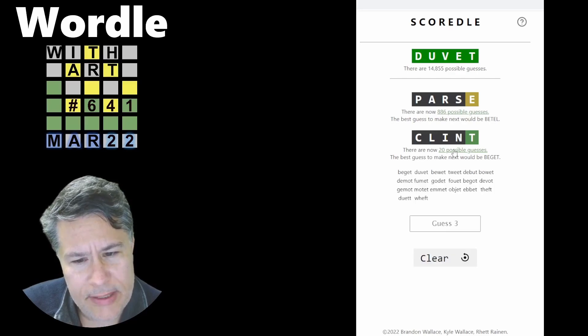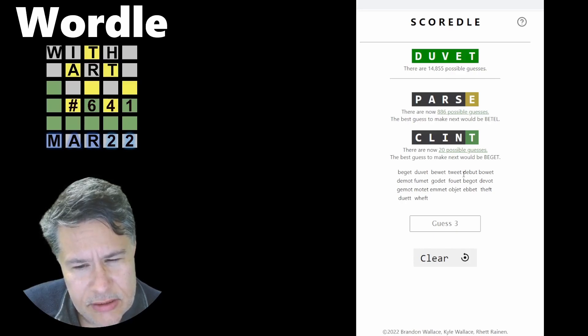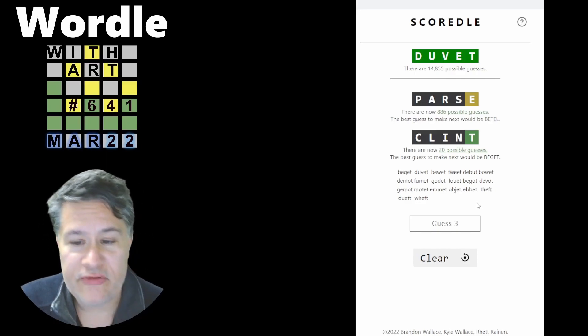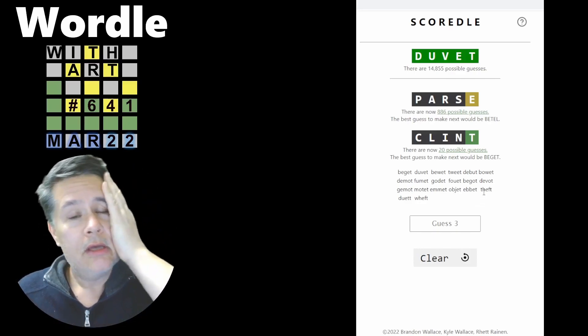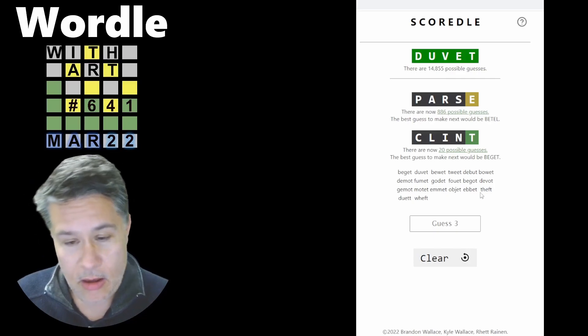And then we'll do tornado. Parse Clint, the Parse Clint kid. He's got 20 guesses. And again, sort of similar. Yeah. Beget, Duvet, tweet, debut, four, five, maybe actually slightly better, but similar. So, yeah. Well, there you have it. There you have it, guys.